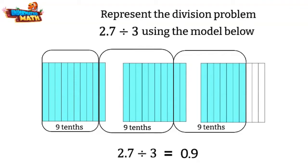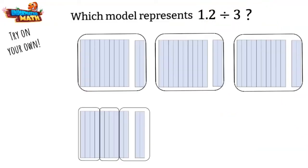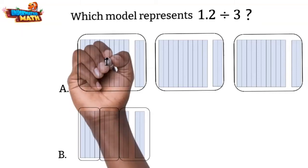Now that you have had practice, try one on your own. Which model represents 1 and 2 tenths divided by 3? Is it model A or model B? Let's look at the first one together. This one shows three groups of 1 and 2 tenths.